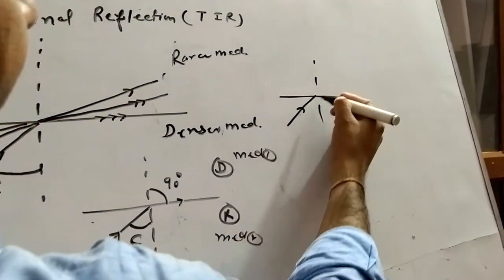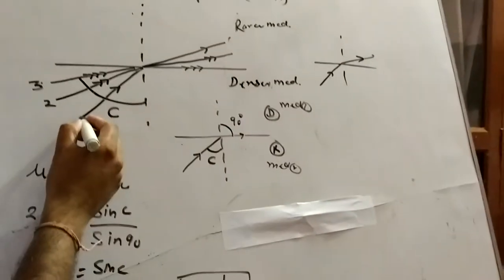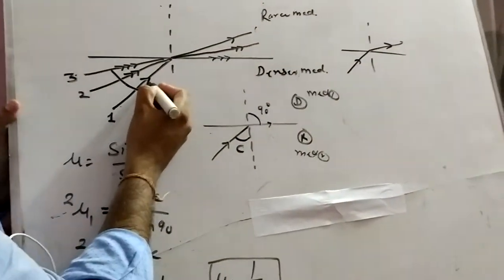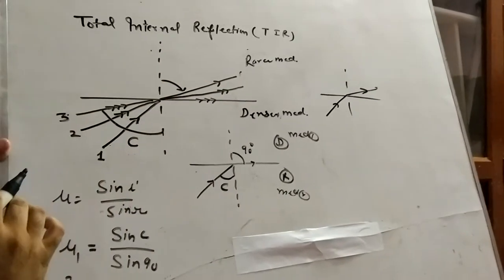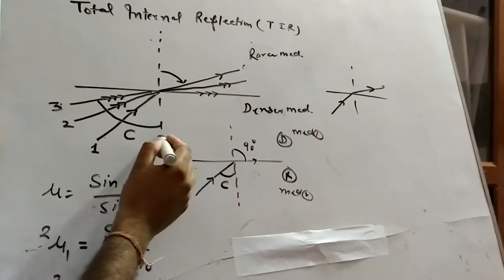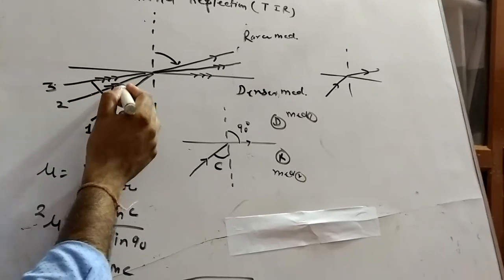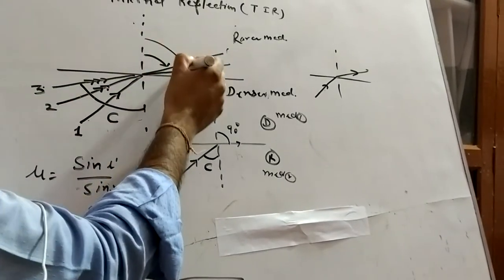So, for the first ray, this one, it will bend away from normal. Okay, if we increase the incidence angle for the second ray, double arrow, it will bend more.